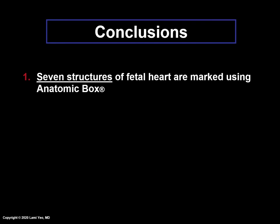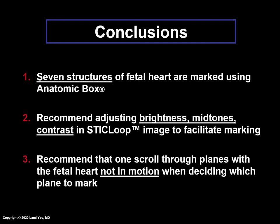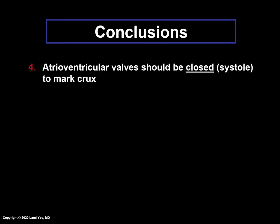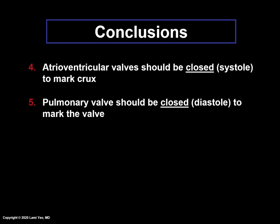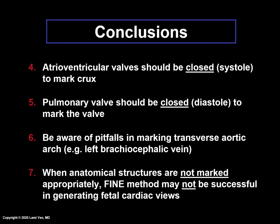In conclusion, seven structures of the fetal heart are marked using Anatomic Box. We recommend adjusting brightness, midtones, and contrast in the STICLoop image to facilitate marking. We also recommend scrolling through the planes with the fetal heart not in motion when deciding which plane to mark. The atrioventricular valve should be closed in systole to mark the crux. The pulmonary valve should be closed in diastole to mark the valve. Be aware of pitfalls when marking the transverse aortic arch, such as the left brachiocephalic vein. When anatomical structures are not marked appropriately, the FINE method may not be successful in generating fetal cardiac views.